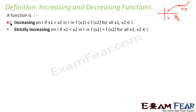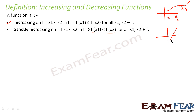Similarly, for a strictly increasing function, if you take any two points x1 and x2, then f(x1) has to be strictly less than f(x2) — it cannot be less than or equal to. Such a function always strictly increases. If x1 and x2 are any two points, then f(x1) has to be less than f(x2).